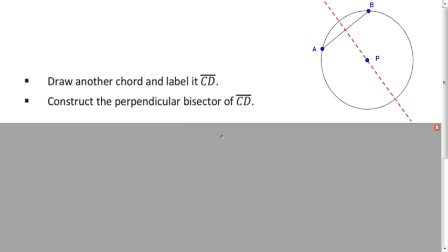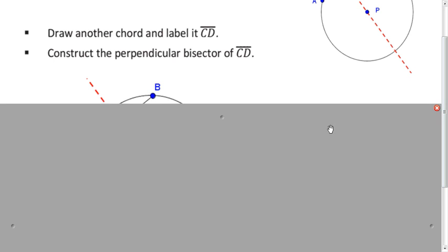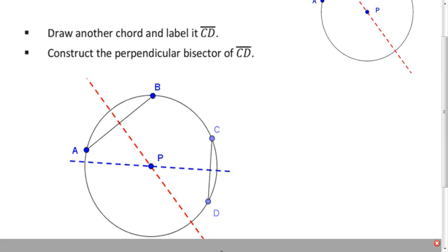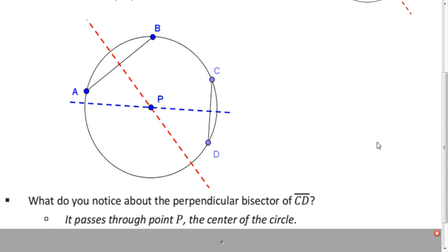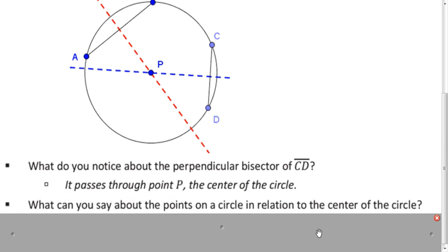Let's try it for another chord. So draw a chord CD and try the same thing. So here's my chord CD, and there's the blue perpendicular bisector. And what do you notice about it? It also passes through the center P.